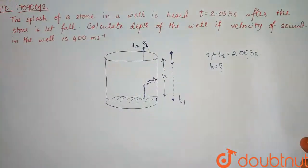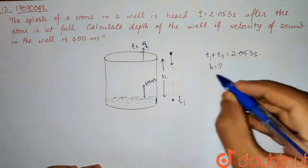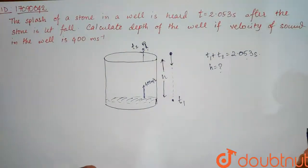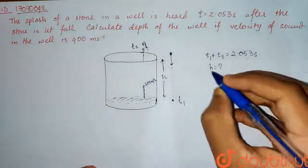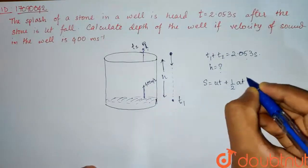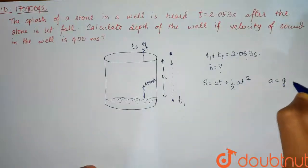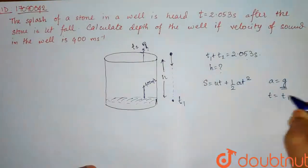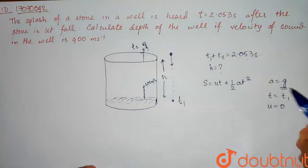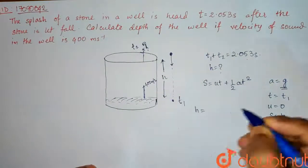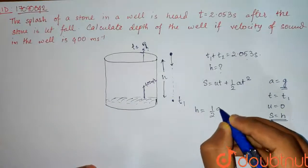First of all, let's see how we can write t1. So for t1, we will use free fall equation. If you remember the equation of motion, S is equal to ut plus half at square. In this case, our A will be acceleration due to gravity which is g, t is our t1, and u is initial velocity which is zero because we are dropping the stone in free fall. And S will be our depth of the well. So this equation will become H is equal to half g t1 square.